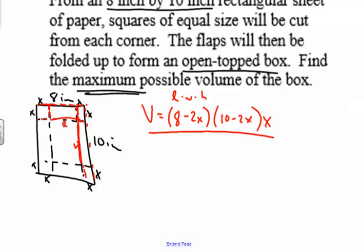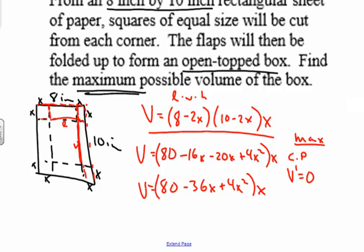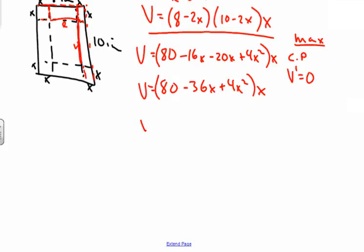So this is the volume of the box. Now to solve this optimization problem, what we want to do is find the maximum. To find the maximum volume using calculus, we want to figure out our critical points — when the derivative of the volume equals 0. From here I'm just going to simplify: we'll have 80 minus 16X minus 20X plus 4X squared, all multiplied by X. So our volume is 80X minus 36X squared plus 4X cubed.